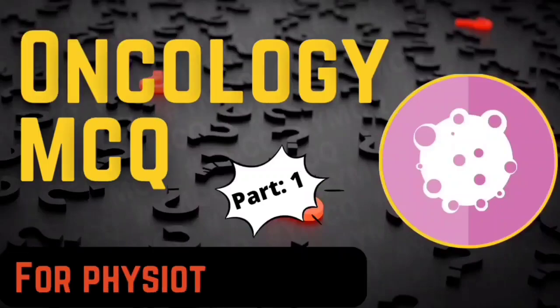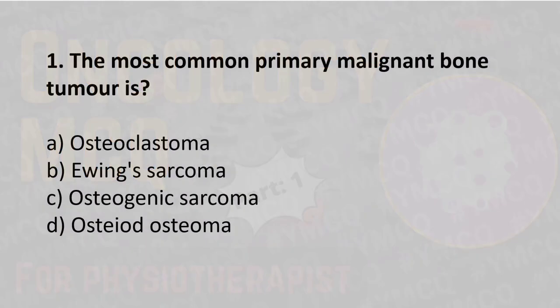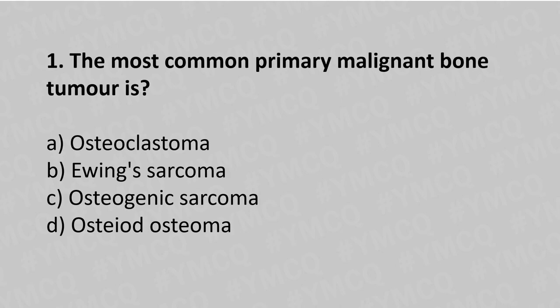Hello, welcome to Oncology for Physiotherapists MCQ series. Here we will be discussing clinically seen oncology conditions with the help of MCQs. The first question: the most common primary malignant bone tumor is option A osteoclastoma, option B Ewing sarcoma, option C osteogenic sarcoma, option D osteoid osteoma.